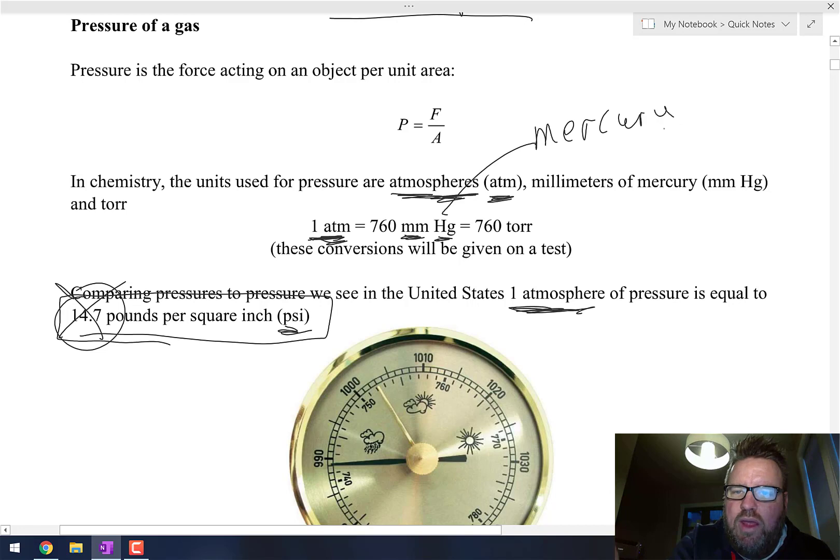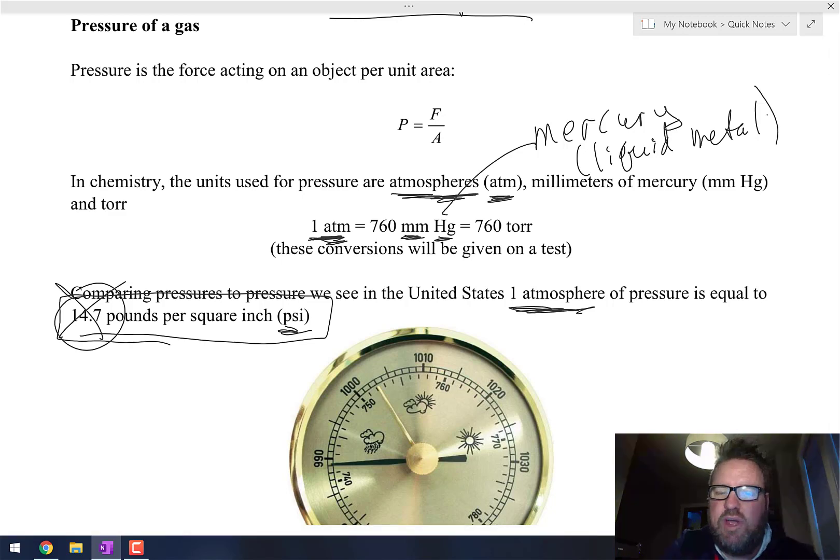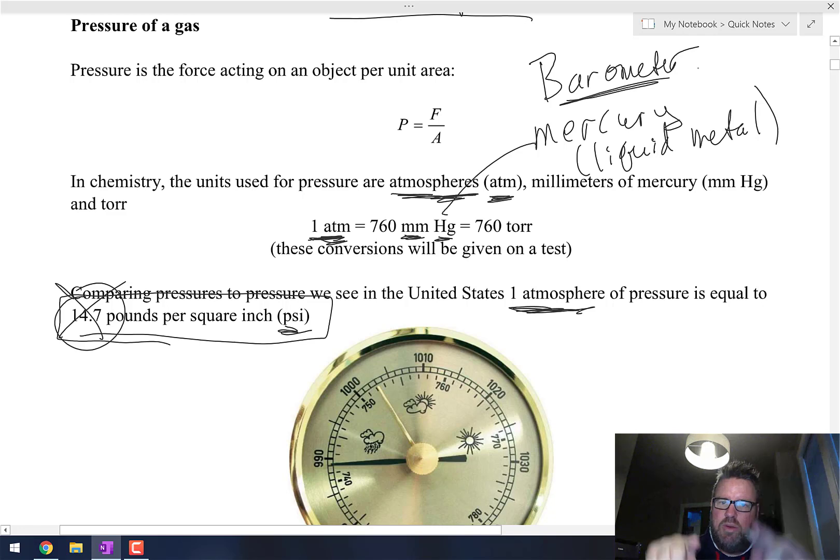The reason that we use mercury is because mercury is a liquid metal, so it can move. A lot of times when they measure the atmospheric pressure, they use what's called a barometer. In the olden days, a barometer is something that had some mercury in it and that mercury would move depending on how much air was in the air—how many particles of gases were in the air. In a high-pressure system you would have a lot of air, and in a low-pressure system you wouldn't.